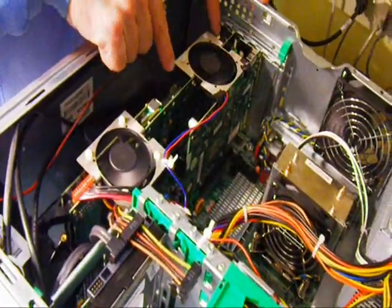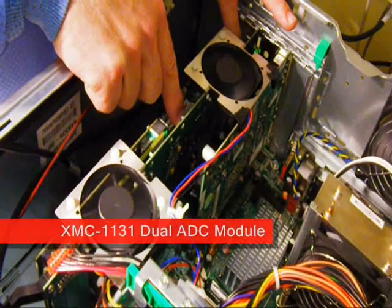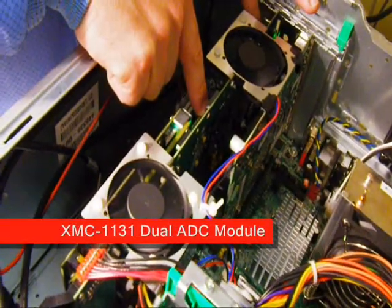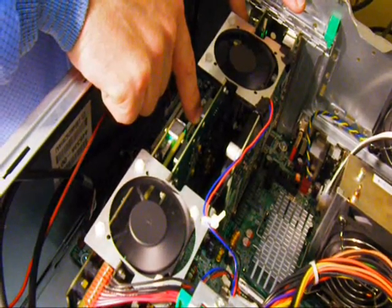And mounted on the 2910, there's an XMC 1131, which is a dual ADC board with a user FPGA, the Vertex 5 FX130T.